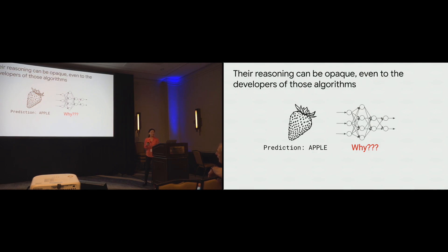And with the increasing complexity of algorithms, such as deep neural nets, their reasoning can be quite opaque, even to the developers of those algorithms.